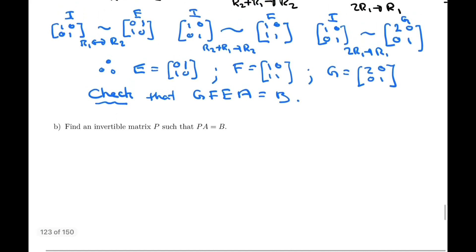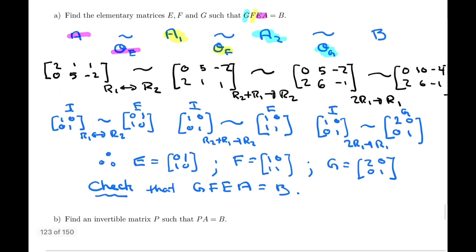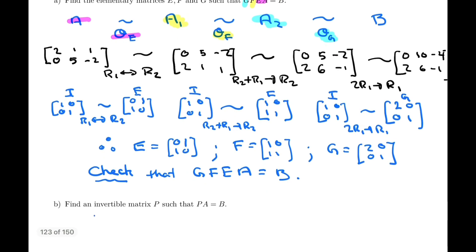So in part B, find an invertible matrix P such that PA equals B. Well, we found three matrices such that GFE equals A. So since GFE times A, I said equals A, I meant GFE times A equals B. And of course, that means that we can just rename this product matrix P.